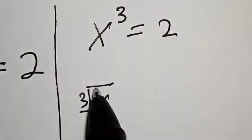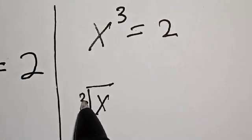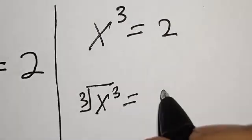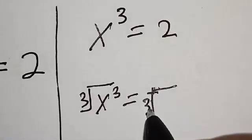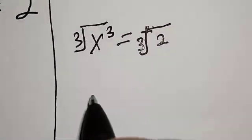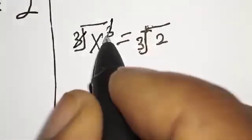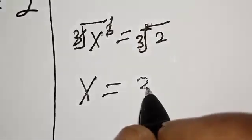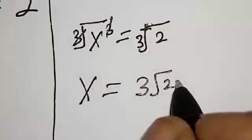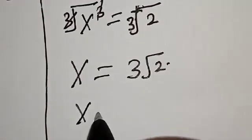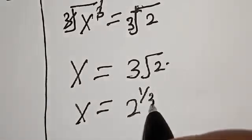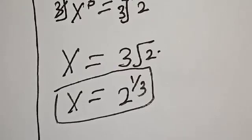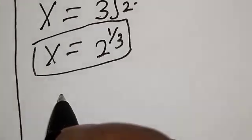From s raised to power 3 is equal to 2, let's take the cube root of both sides. We have cube root of s raised to power 3 is equal to cube root of 2. Then s is equal to cube root of 2, which is s equal to 2 raised to power 1 over 3. That is the value of s from the first case.